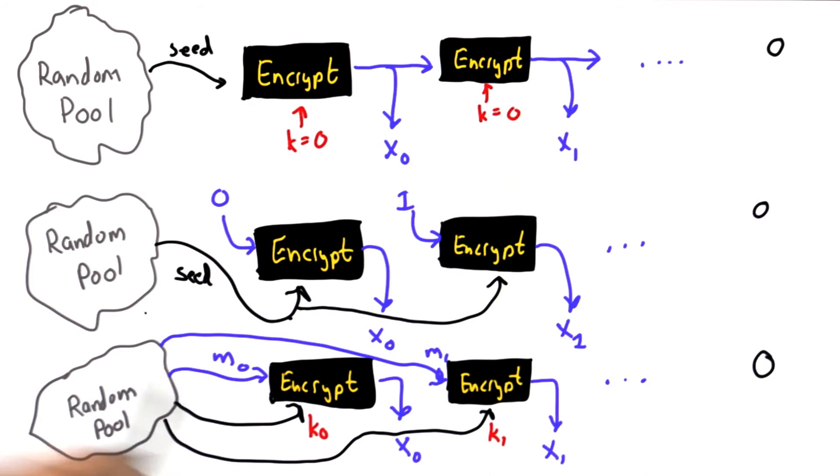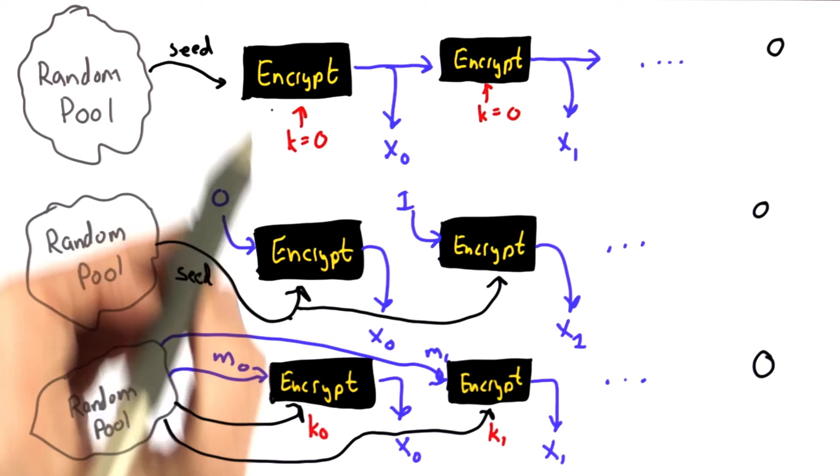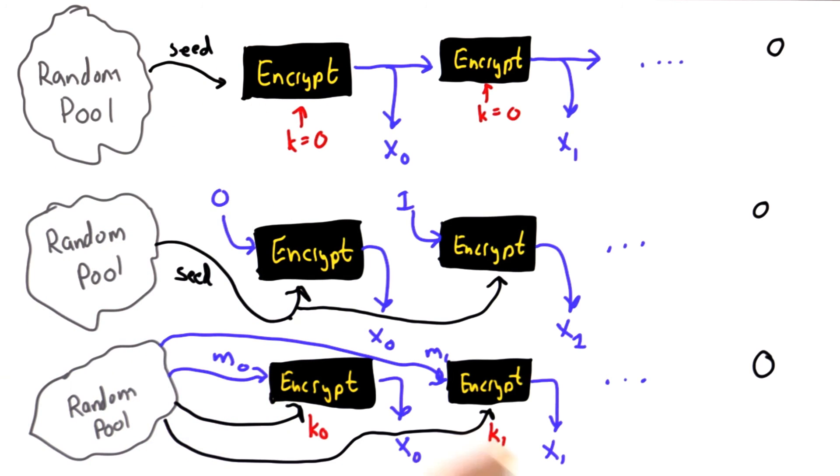Which one of these options makes the most sense for a pseudo random number generator? Let's assume our encryption function behaves well. It provides a mapping between keys and messages that's hard to invert if you don't have the key, and that we have a random pool that provides a limited but good source of randomness.